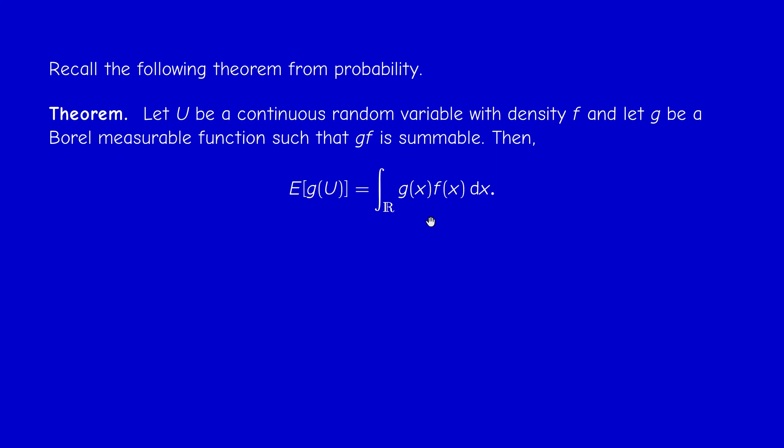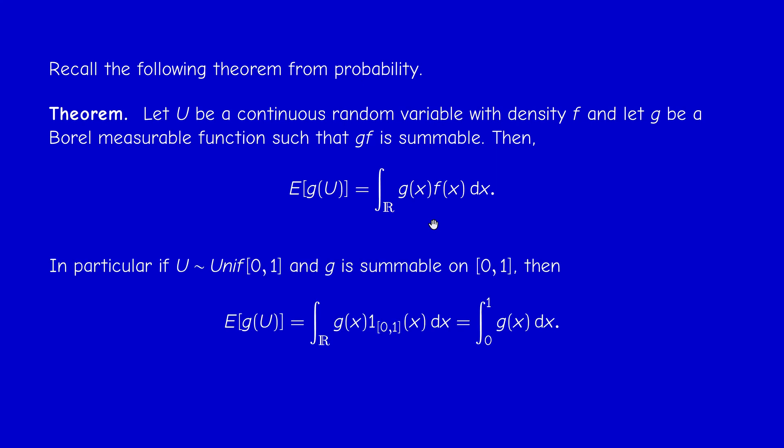In particular, if you take g to be the identity, we get E[U] equal to the integral of x·f(x) dx. Now if we take U to be uniformly distributed over (0,1), the density is the characteristic function of (0,1), and then the expectation of g(U) — if g is summable — is just the integral from 0 to 1 of g(x) dx.